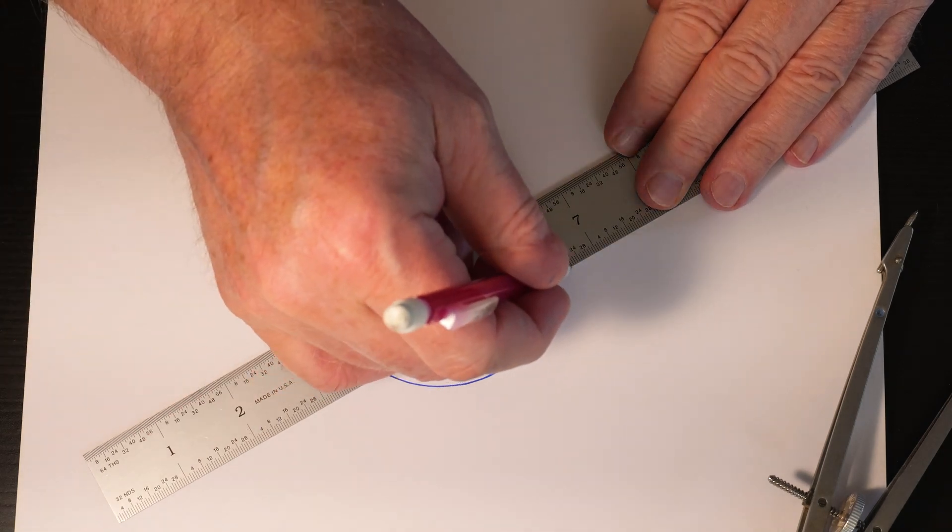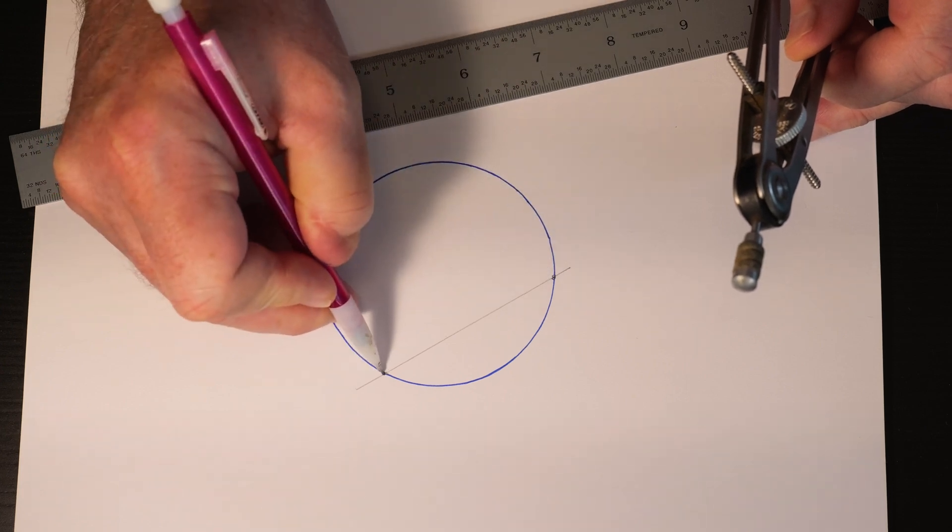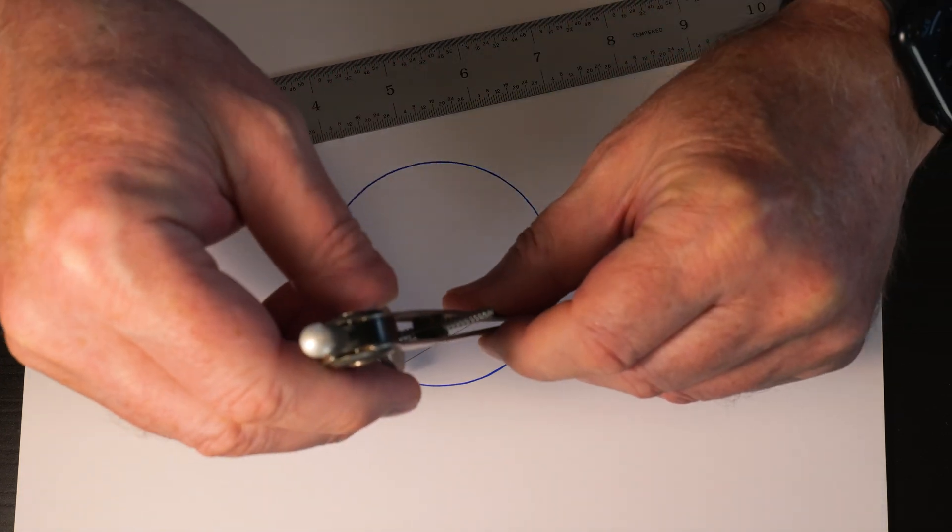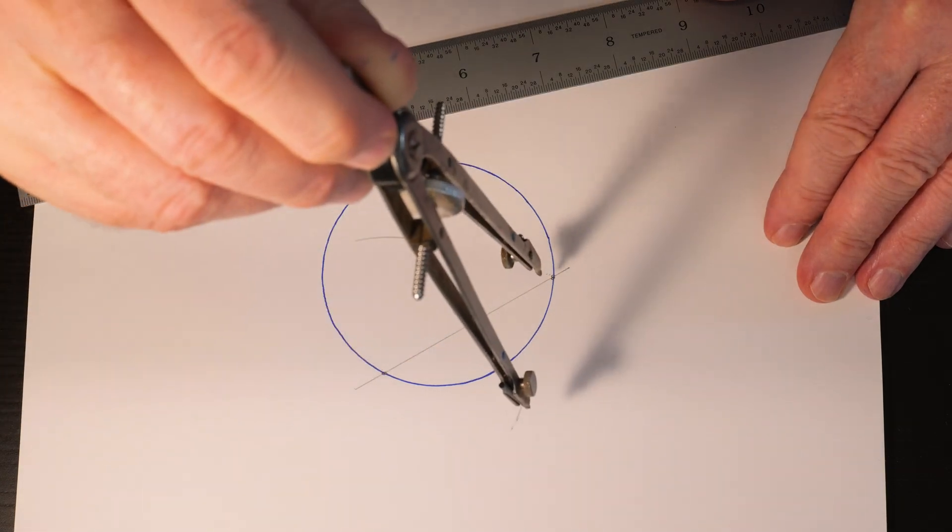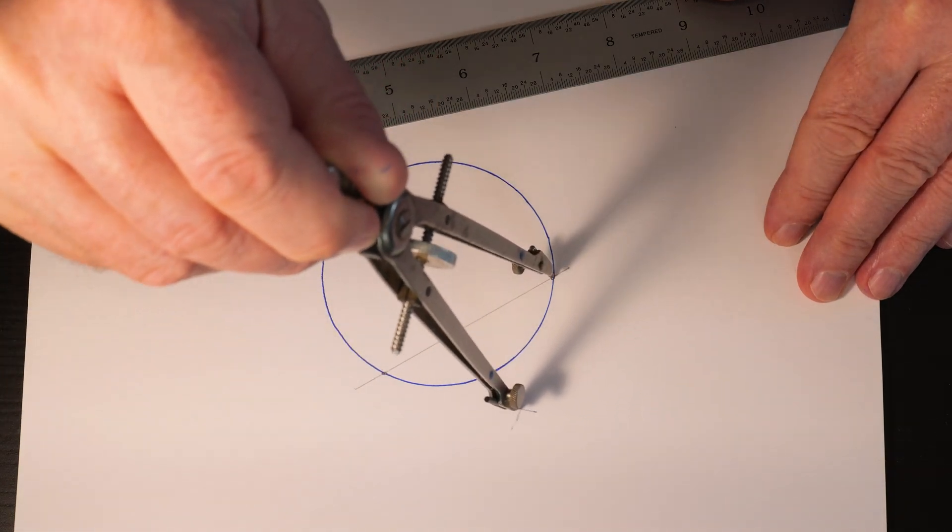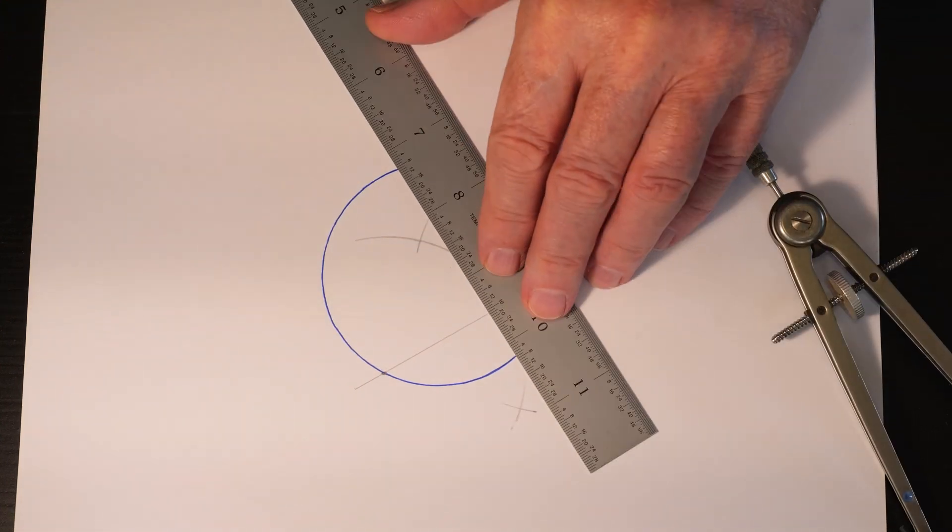Then we're going to find the midpoint between those two intersecting points. Just take your compass and make a mark there, down there. We're going to come up here, make a mark. Now we're going to draw a line through those two intersecting arcs.